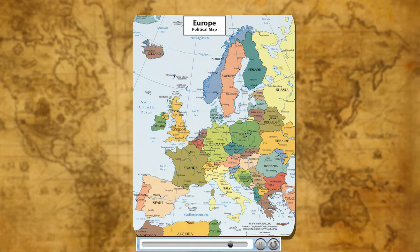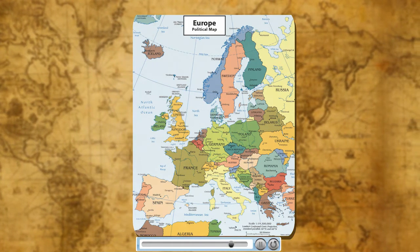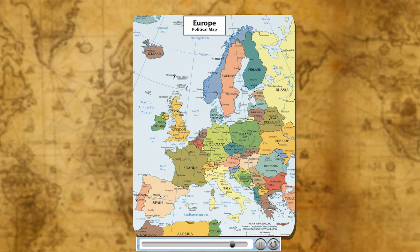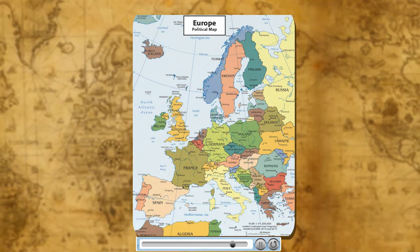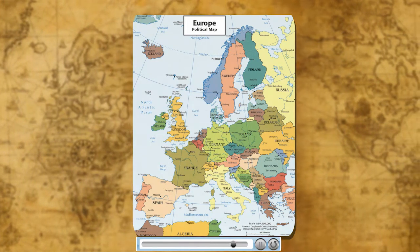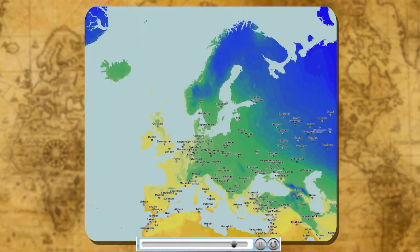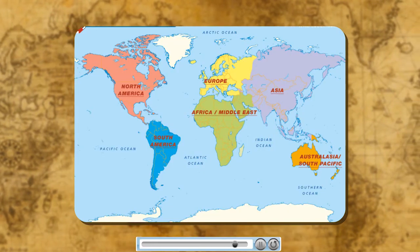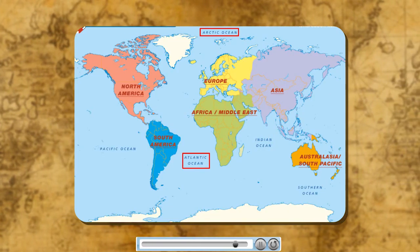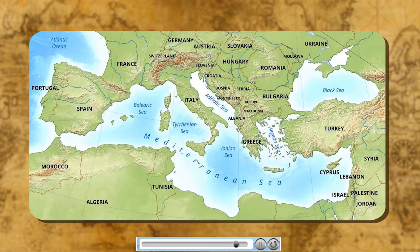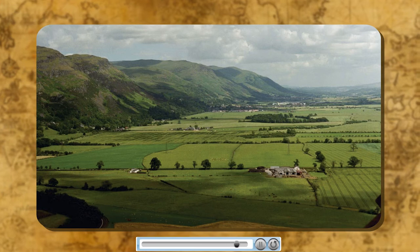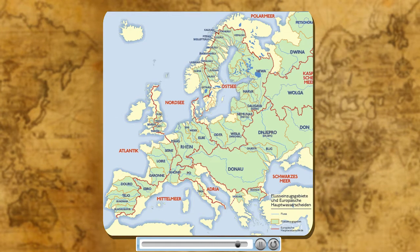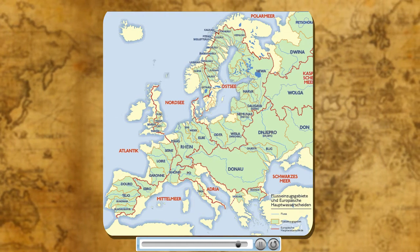In terms of size, Europe is the sixth largest continent. Europe is the only continent which is populous as well as prosperous. It lies from 36 degrees north to 72 degrees north latitudes and from about 10 degrees east to 60 degrees east longitudes. It lies almost entirely in the temperate zone. Europe is surrounded by the Arctic Ocean in the north, the Atlantic Ocean in the west and the Mediterranean Sea in the south. It is a continent of high mountains and vast plains. Rhine, Volga, Danube etc. are the main rivers in Europe.